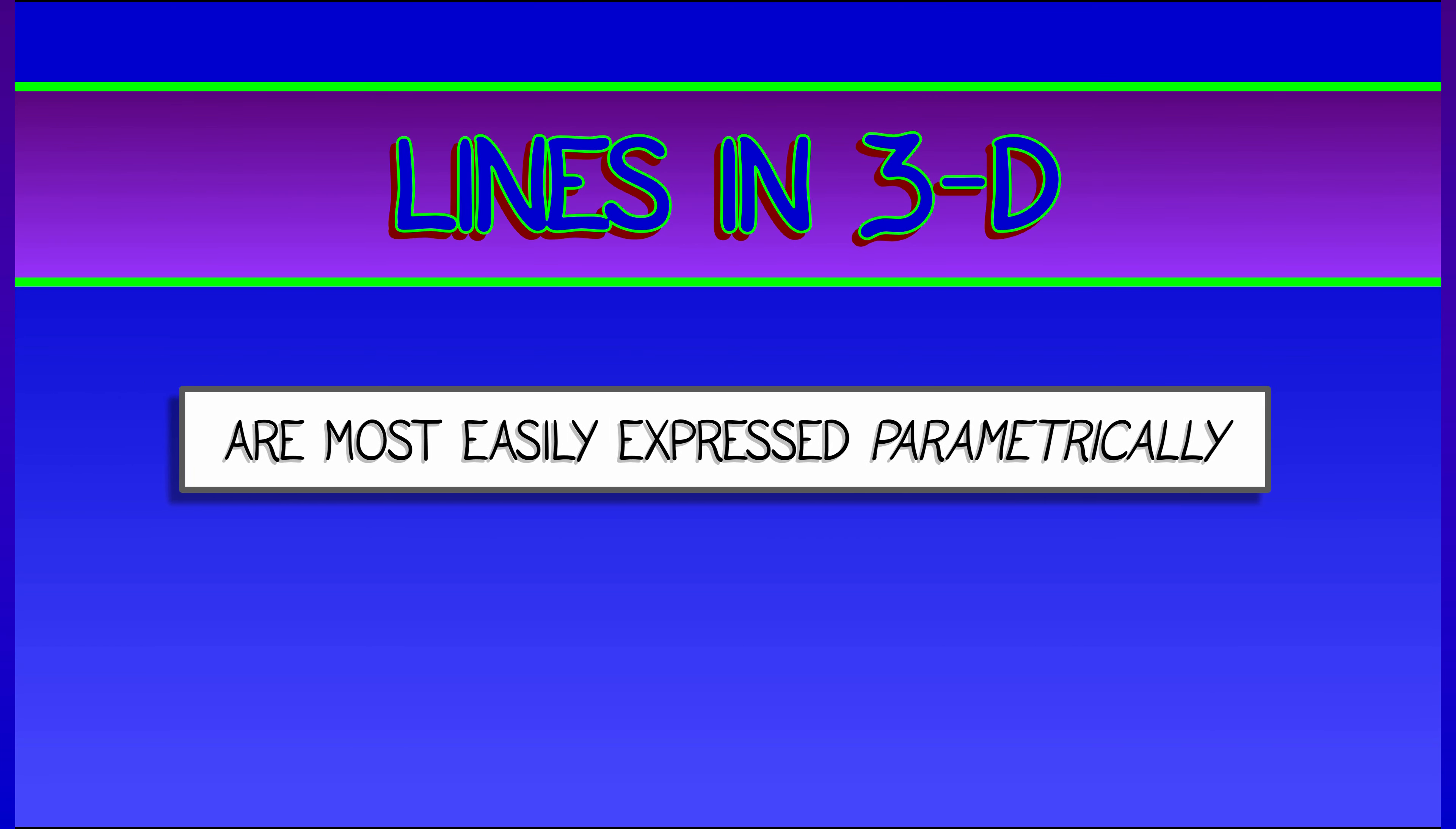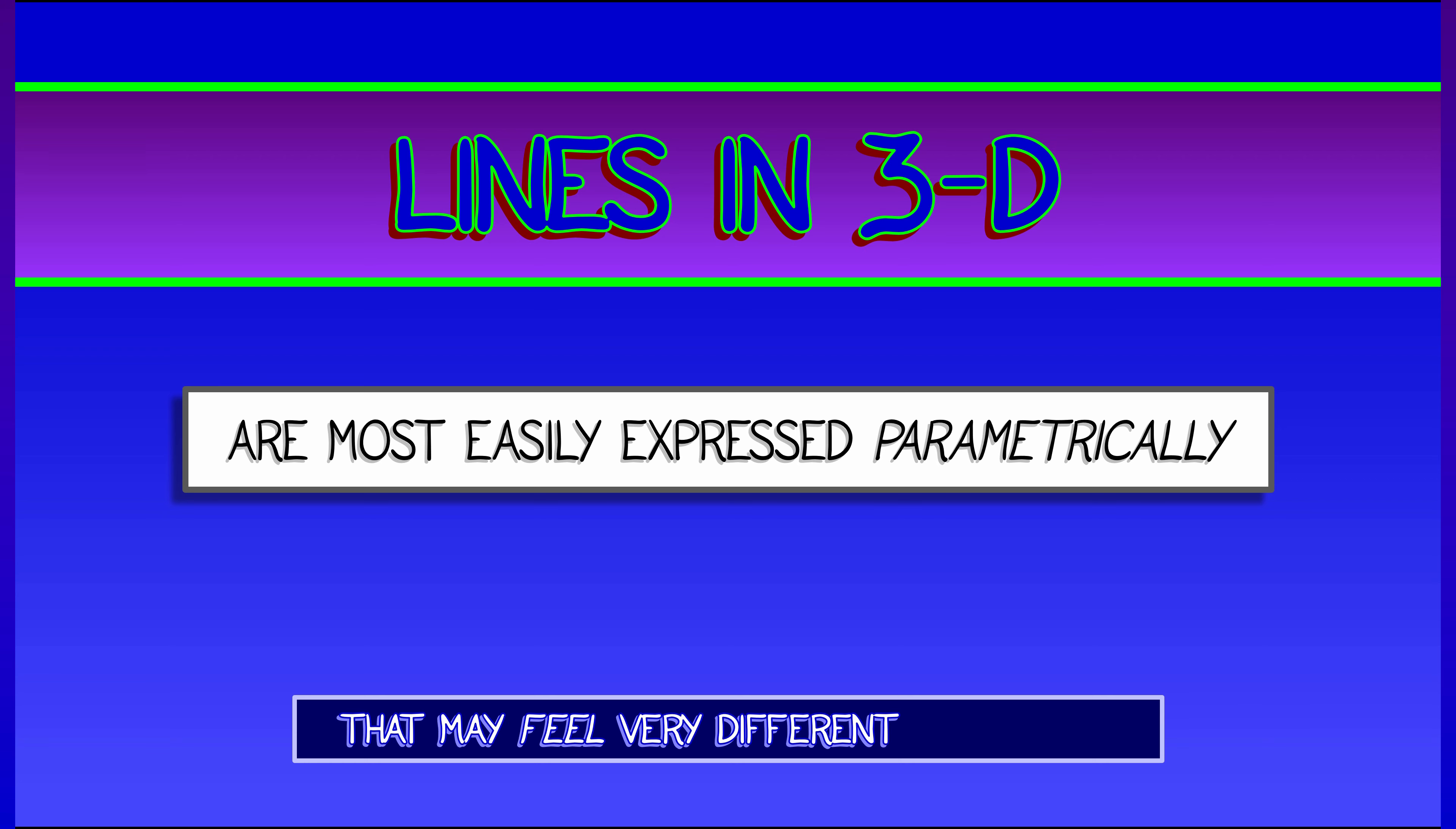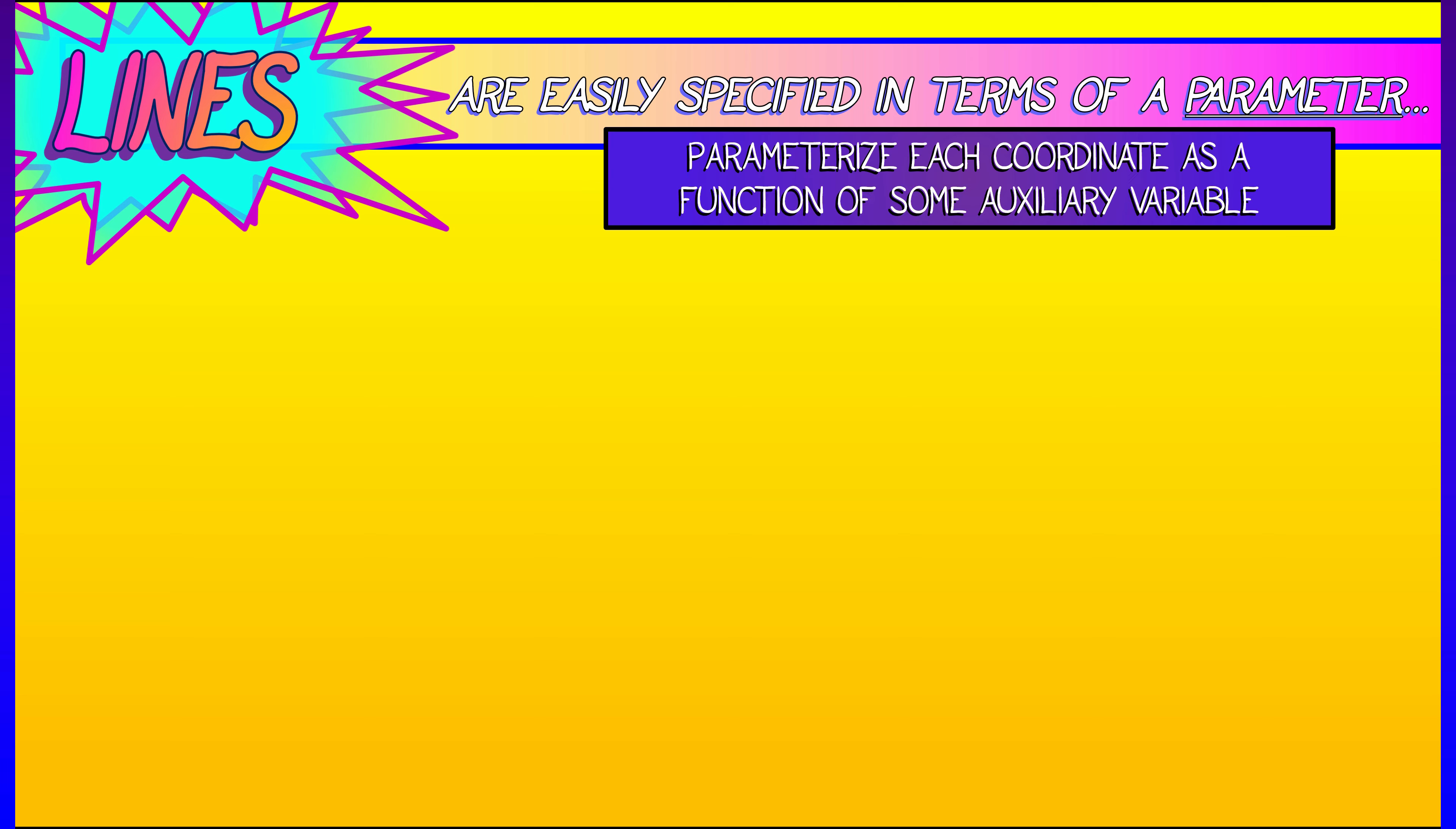Now, when moving to lines in 3D, we're going to find that a parametric representation is more efficient. That's very different than what you're probably used to. So let's go over this with some care. What we're going to do is use some parameter, some dummy variable, and then tell you the x, y, and z coordinates as a function of that. So, for example,